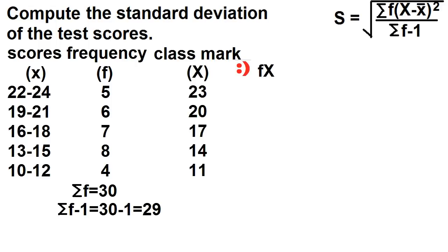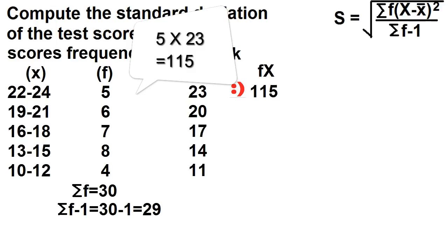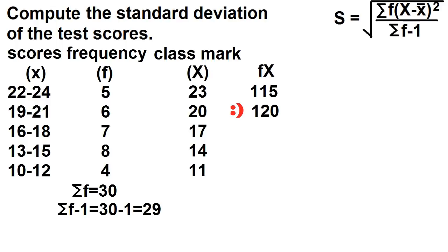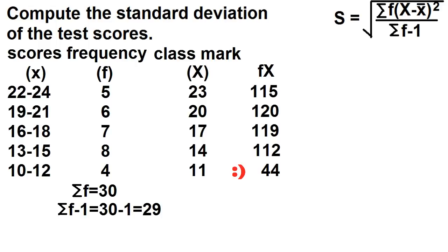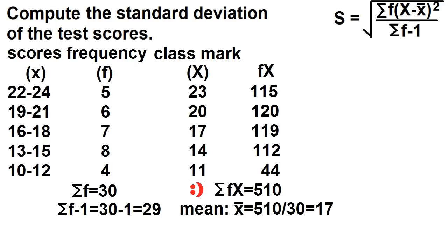Let's add another column for the product of the frequency and the class mark. 5 times 23 is 115. 6 times 20 is 120. 7 times 17 is 119. 8 times 14 is 112. And 4 times 11 is 44. Find the sum — the sum is 510. Then divide it by the total frequency: 510 divided by 30 is 17. This is our mean.